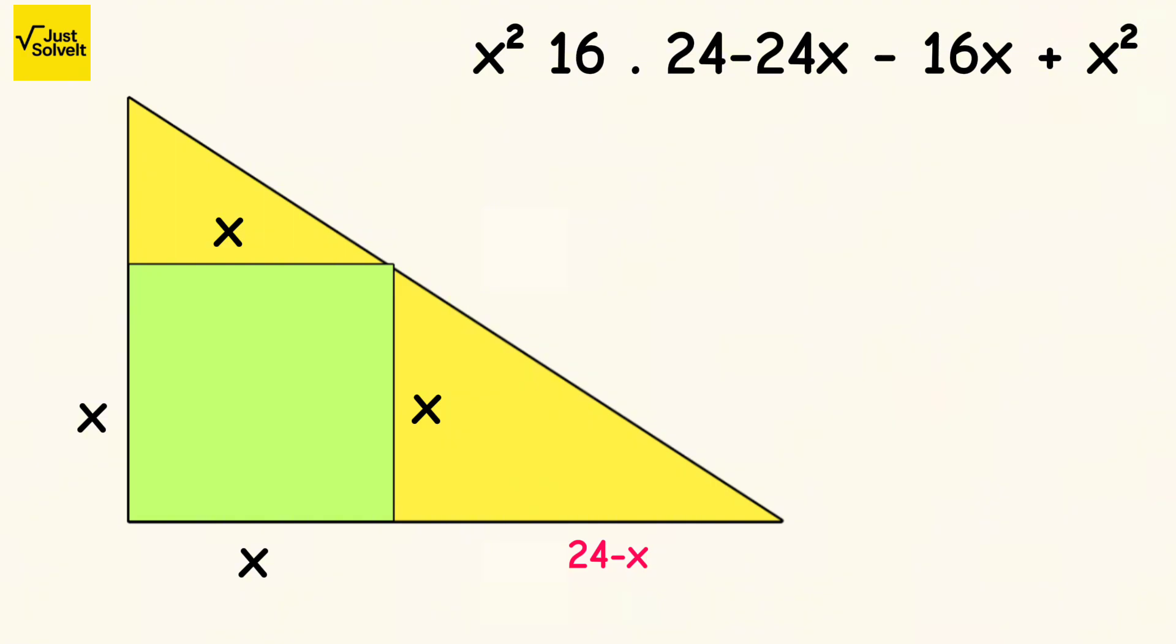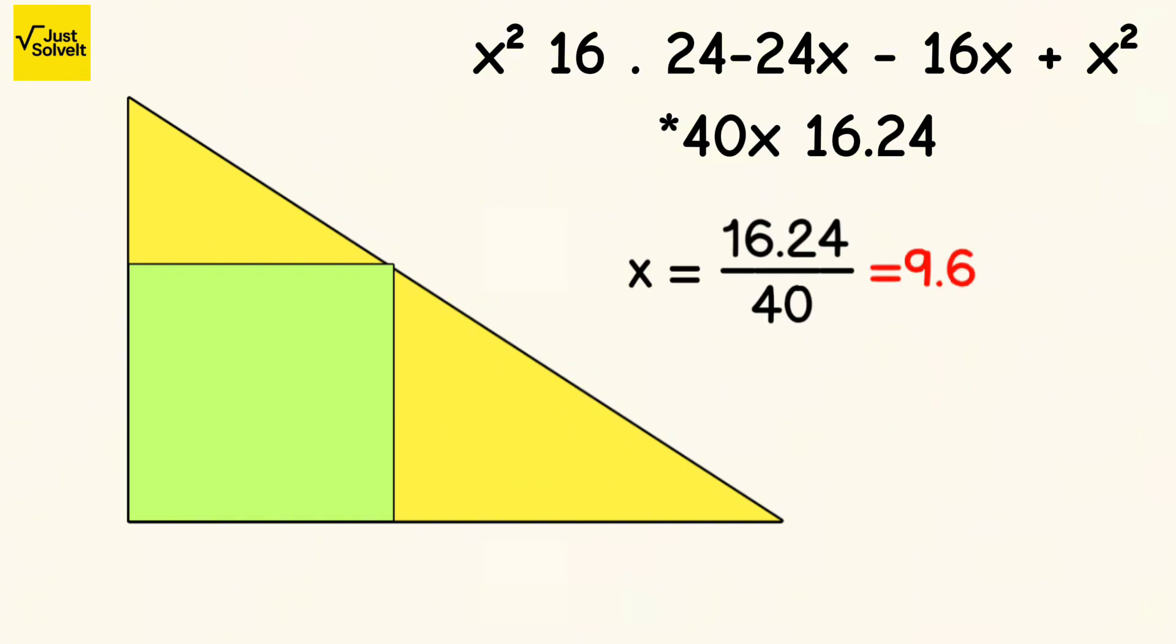Subtract x squared from both sides, and we get 40x equals 16 times 24. Dividing both sides by 40, x equals 9.6.